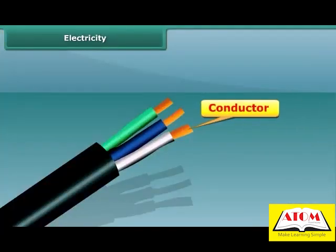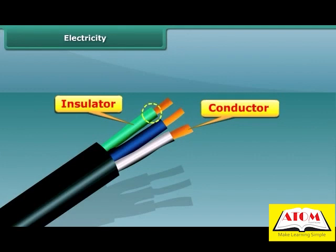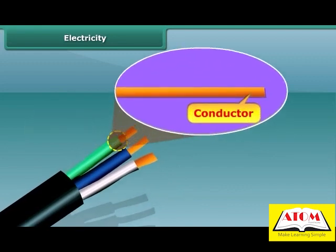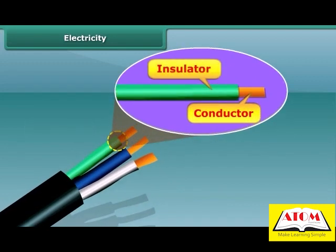Both conductors and insulators are important while using electricity. The conductors like copper or other metallic wires are used for electric supply. But at the same time, these metallic wires are coated by insulating materials like plastic or rubber for safety.